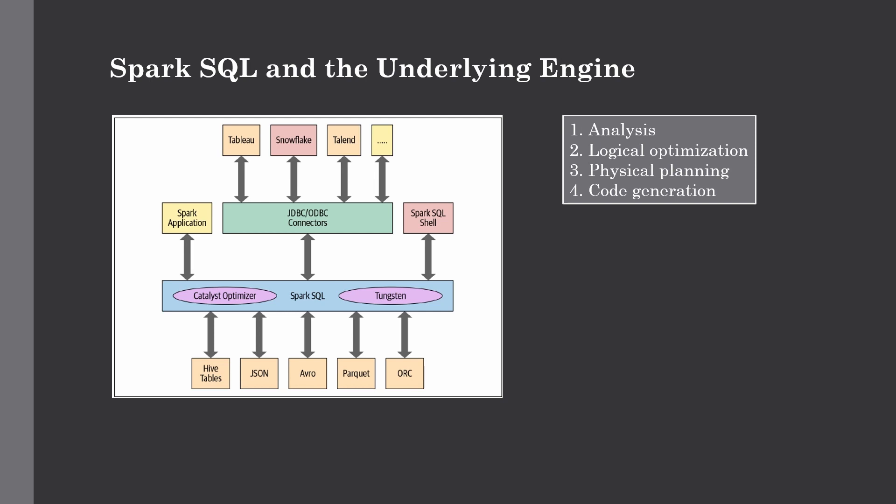First is analysis. Spark SQL engine begins by generating an abstract syntax tree for every SQL or DataFrame query. In this initial phase, any column or table names are resolved by consulting an internal catalog—a programmatic interface for Spark SQL which holds different lists of names, columns, and their data types. Once they have all been successfully resolved, the query proceeds to the next phase.